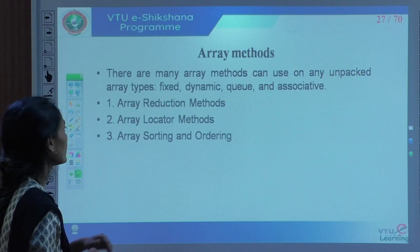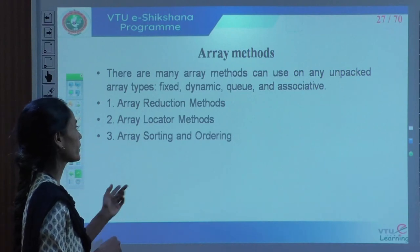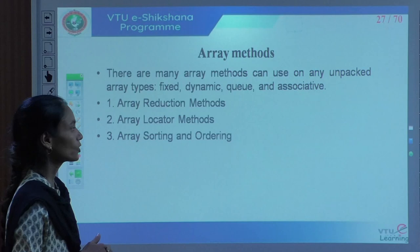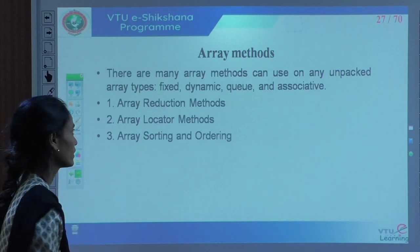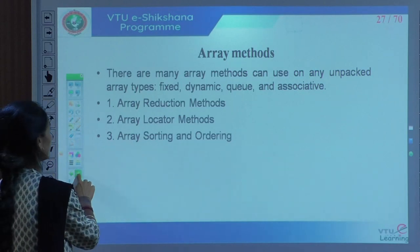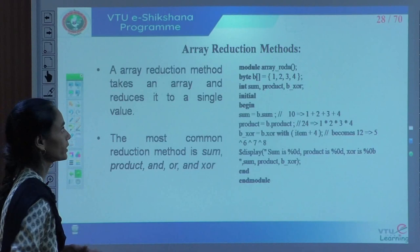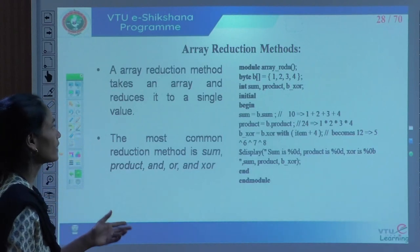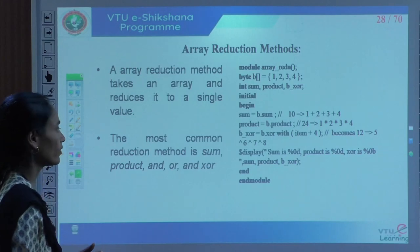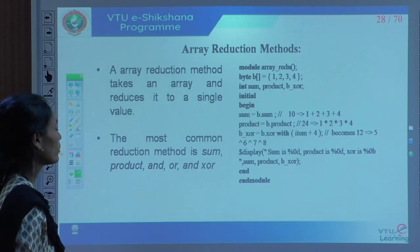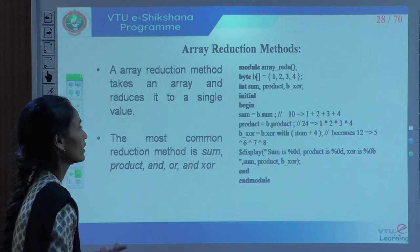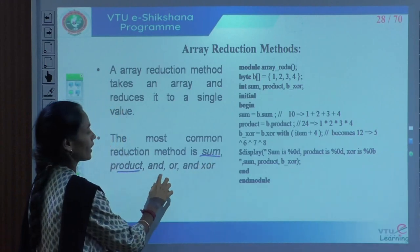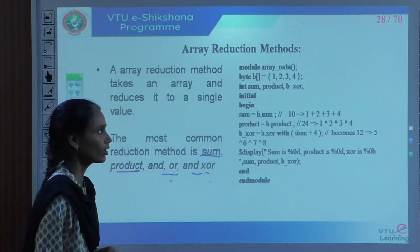Associative array methods: num() returns the number of entries; delete() removes the entry; exists() returns 1 if the element exists in the array, else 0; first() assigns the value of the first index; next() assigns the value of the next index. There are also array reduction methods, array locator methods, and array sorting and ordering methods. Array reduction takes an array and reduces it to a single value. The most common reduction methods are sum, product, AND, OR, and XOR.